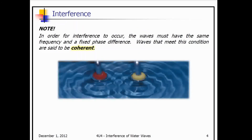Another thing about interference is that the waves have to be the same frequency and they have to have a fixed phase difference. If that phase difference is constantly changing — for example, if one wave is y = sin(x) and another is y = sin(x) minus a function that changes with time — we don't have a fixed phase difference anymore. We have essentially waves that are what we call incoherent, and we don't see an interference pattern we can make sense of. Waves that do meet that condition — same frequency and a fixed phase difference — we call those coherent waves.